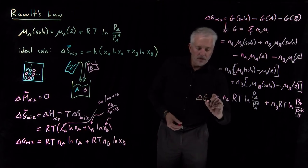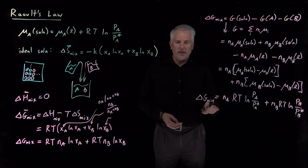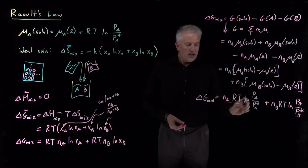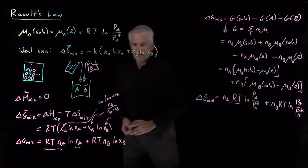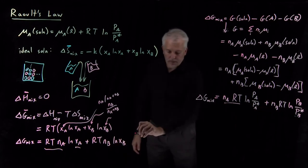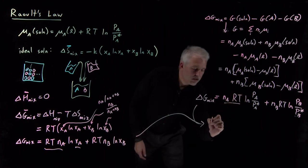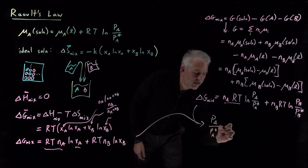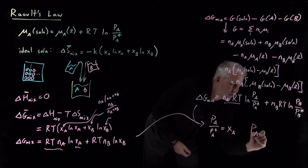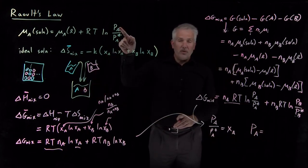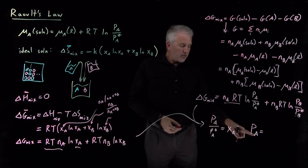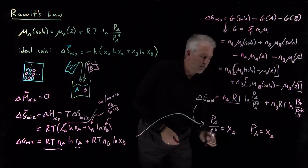We now have two completely different expressions for the Gibbs free energy of mixing, and they must be equal. One expression has N·RT times ln(pressure / vapor pressure), and the other has N·RT times ln(mole fraction). Equating the two, the ratio P_A over P*_A must equal x_A. Rearranging, the partial pressure of A above the solution equals the mole fraction of A times the vapor pressure of pure A.